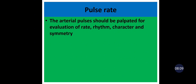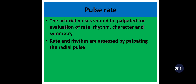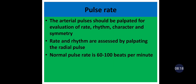The next vital sign is pulse rate. The arterial pulses should be palpated for evaluation of rate, rhythm, character, and symmetry. Normal pulse rate is 60 to 100 bpm. If greater than 100 bpm, it is tachycardia. There are many causes for tachycardia such as fever, hyperthyroidism, strenuous exercise, drugs, and arrhythmias.